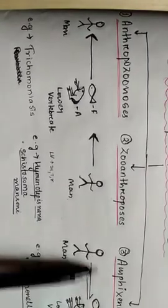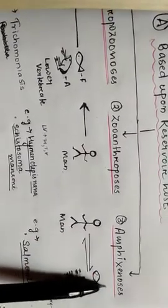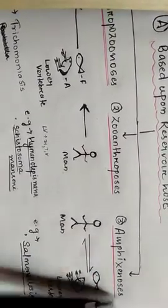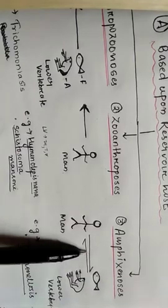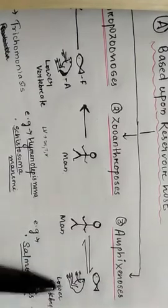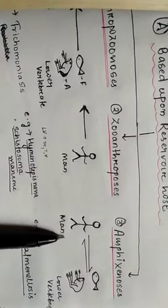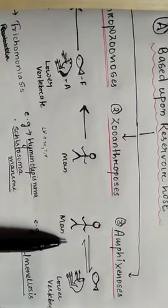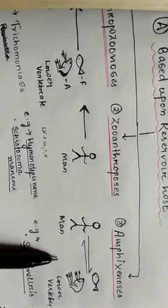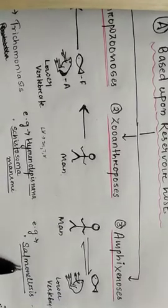The next is Amphizynosis. In Amphizynosis, the disease is shared between both the men and the lower vertebrate and they both can be infected by this disease. The example of Amphizynosis is salmonellosis.